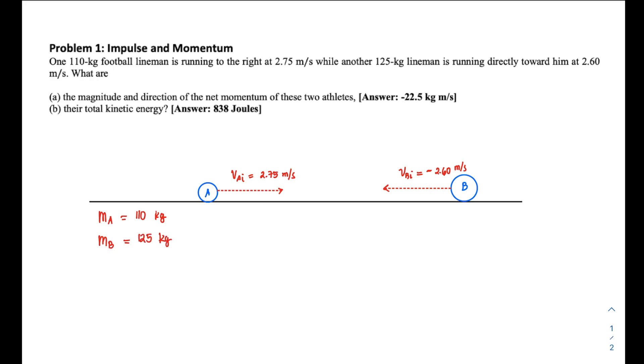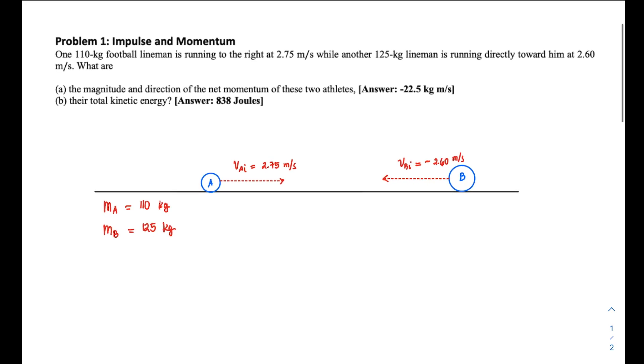To solve part (a), we're looking for the magnitude and direction of the net momentum of these two athletes. If you recall from previous class, when finding net momentum, we do vector addition, especially for cases where angles are involved, such as if momentum A is moving towards some